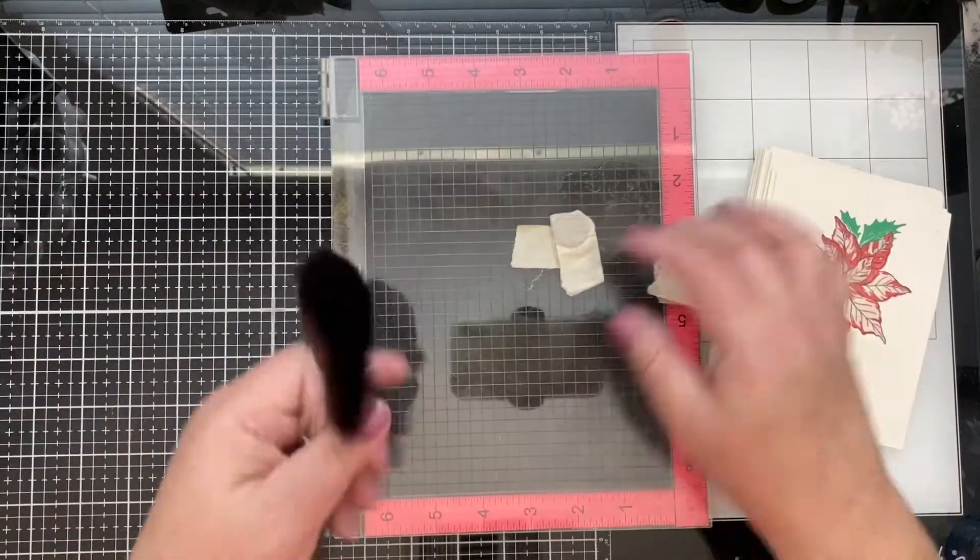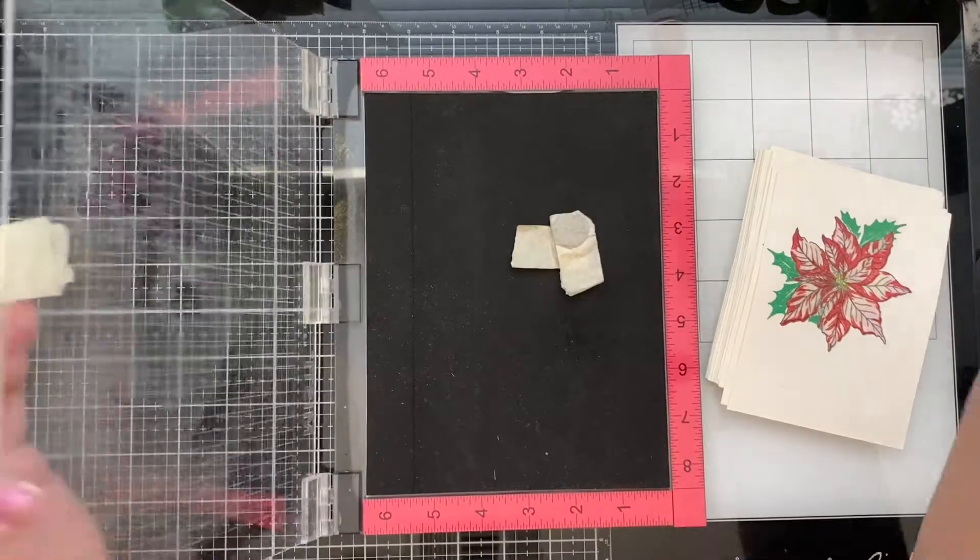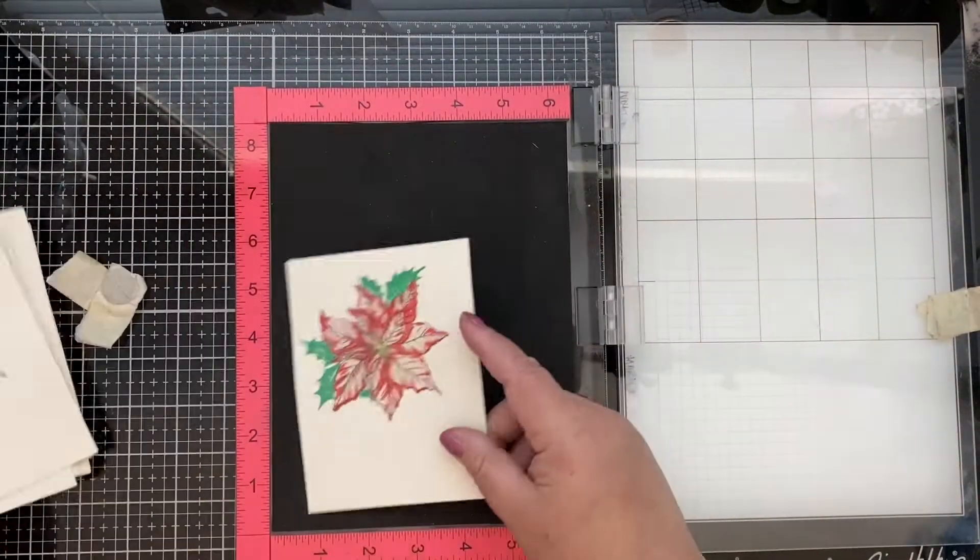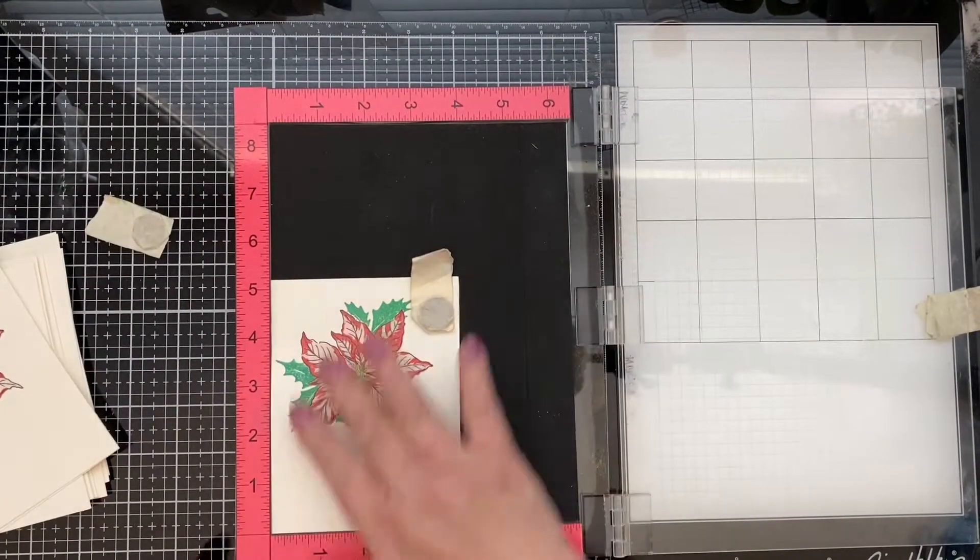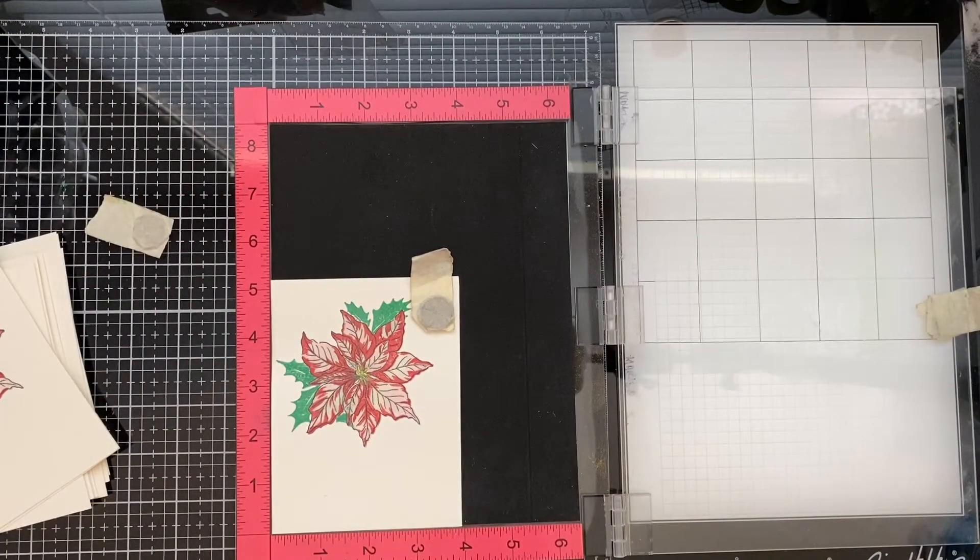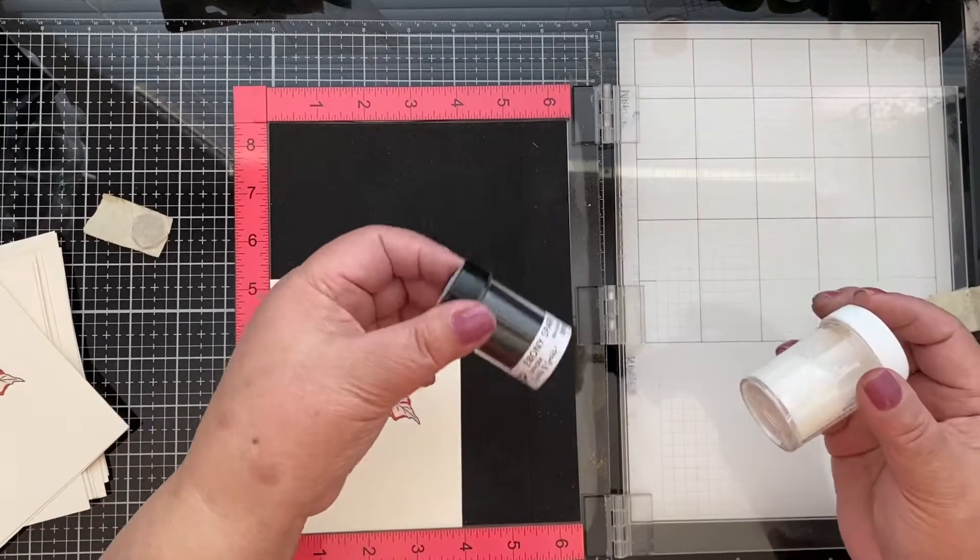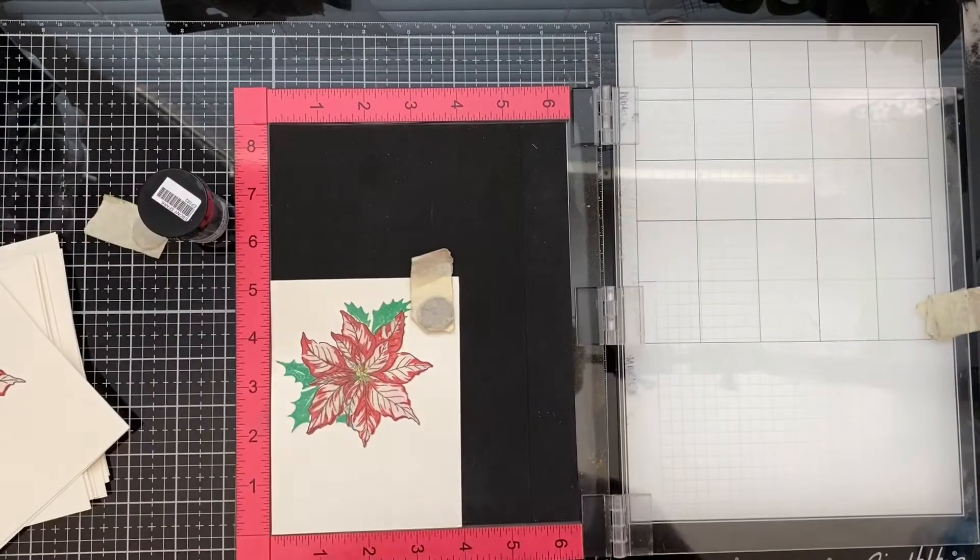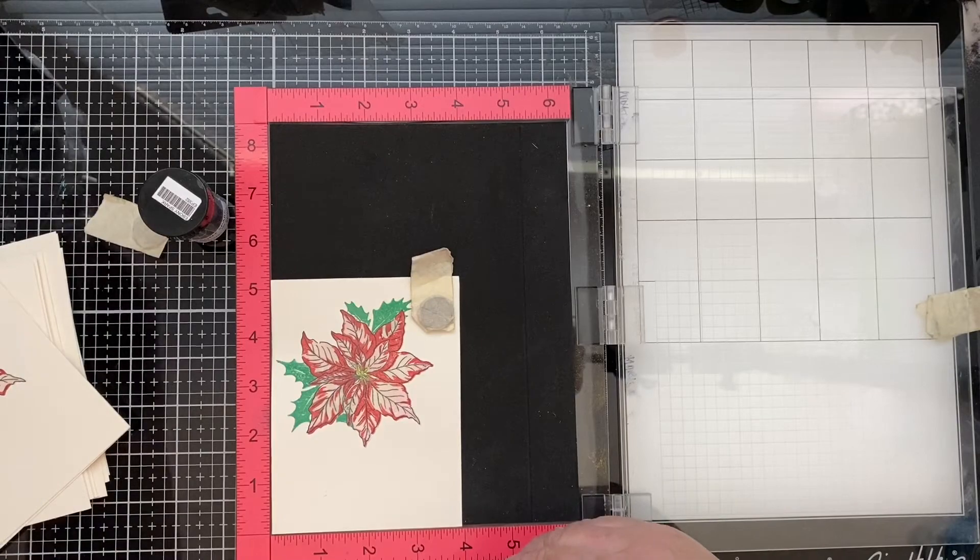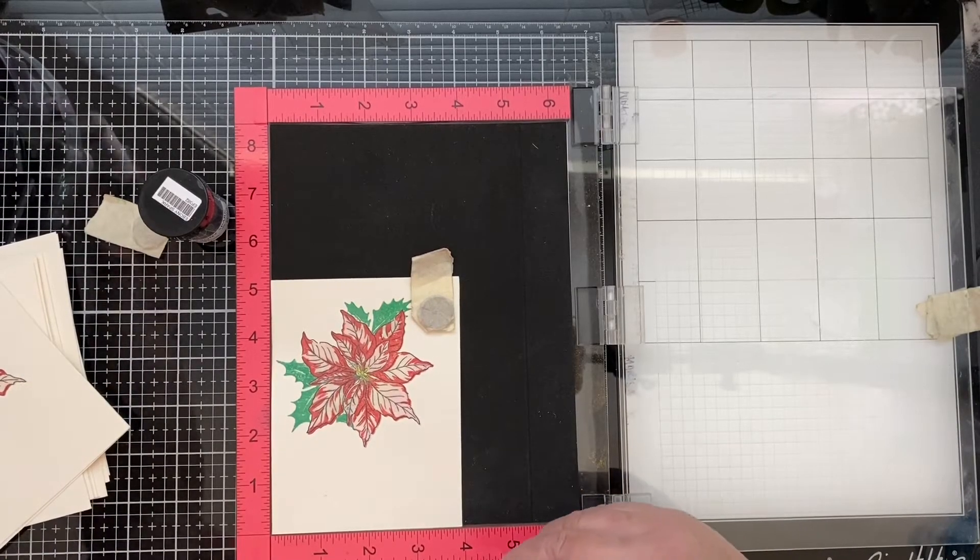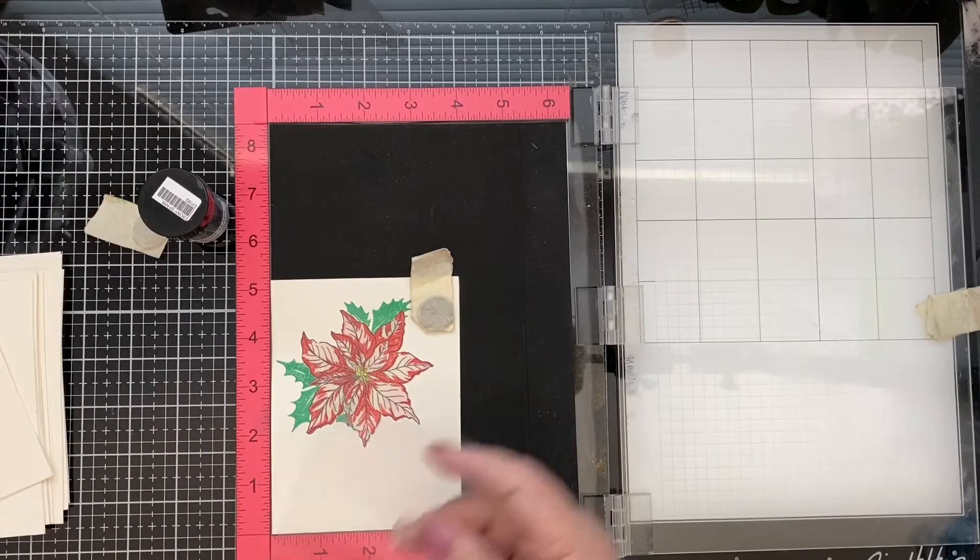All right, so the next thing I want to do is bring this in again and we're going to also work on our sentiment in the front. Okay, let's get our sentiment in the front. As we ink or as we put on the sentiment, we're going to go ahead and put on our embossing powder on top of it so we can get going and rolling on our project. For this one I want to say merry and bright.